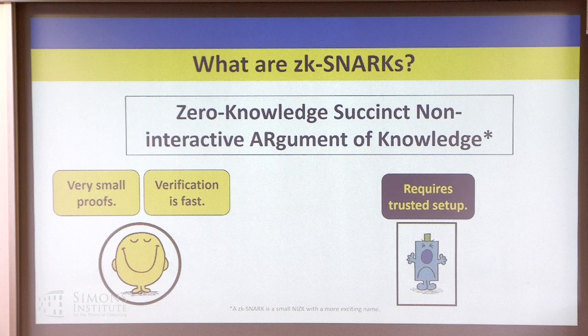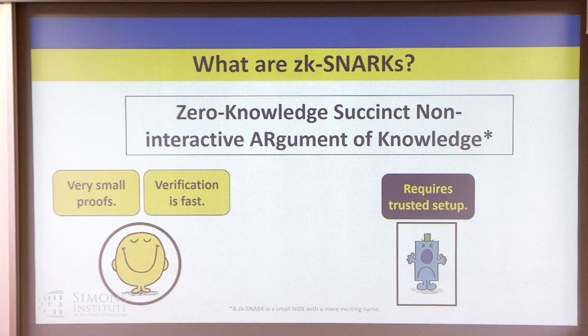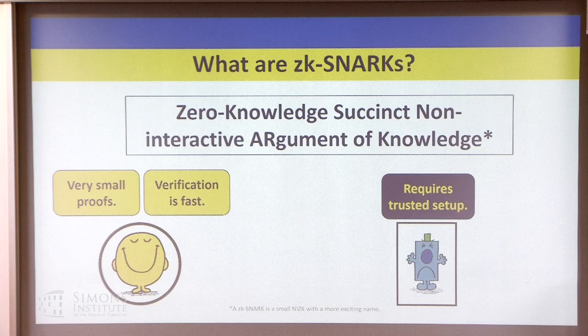In other schemes you almost always have a logarithmic factor, where you're representing the circuit in some way, the verifier queries and the prover responds. For some applications that overhead isn't a problem, but for others where your verifier is very time-constrained, you might be willing to accept a slightly higher prover cost and slightly less nice assumptions in order to get verification down.